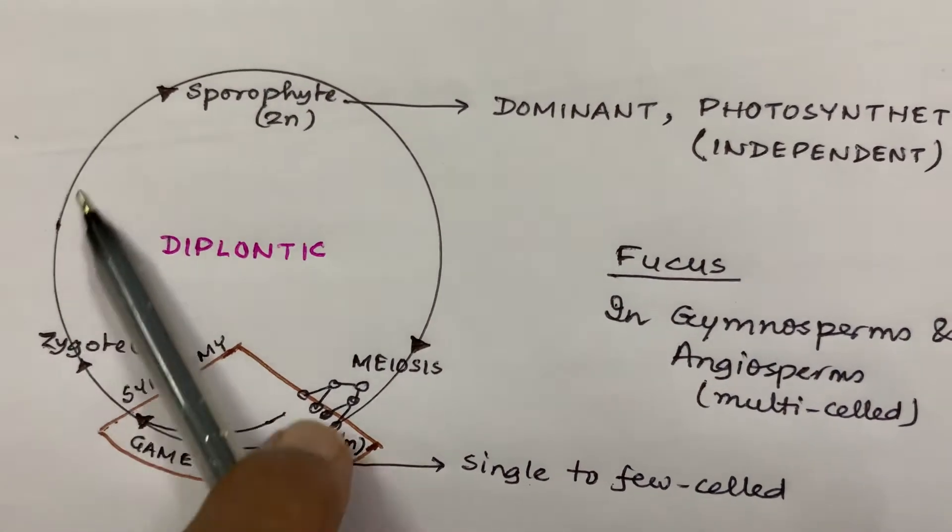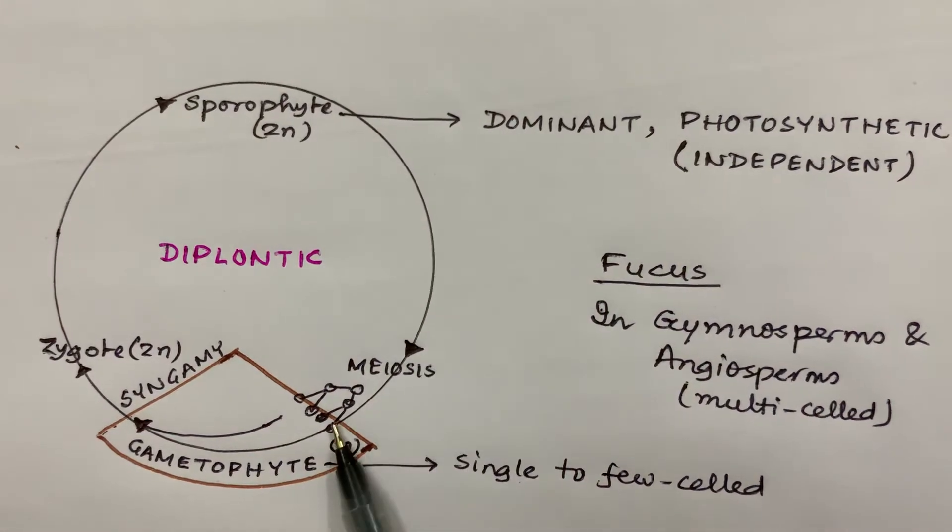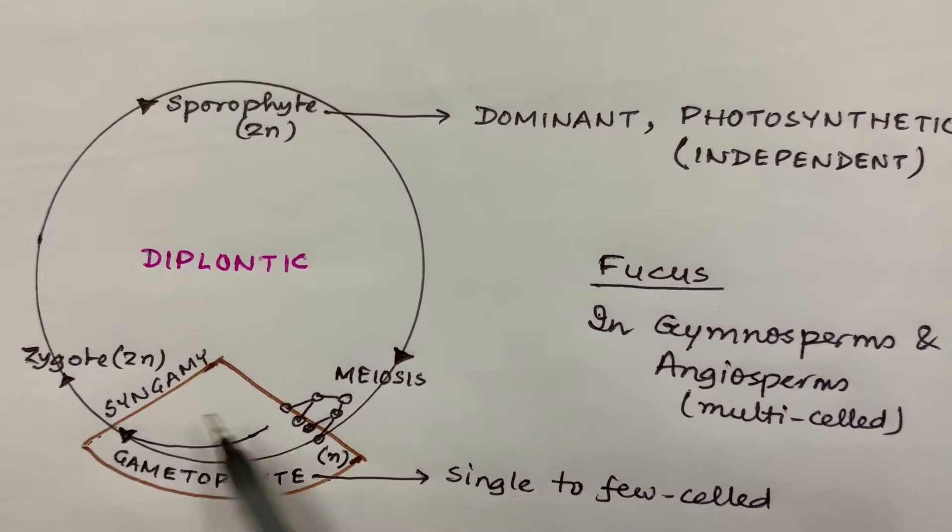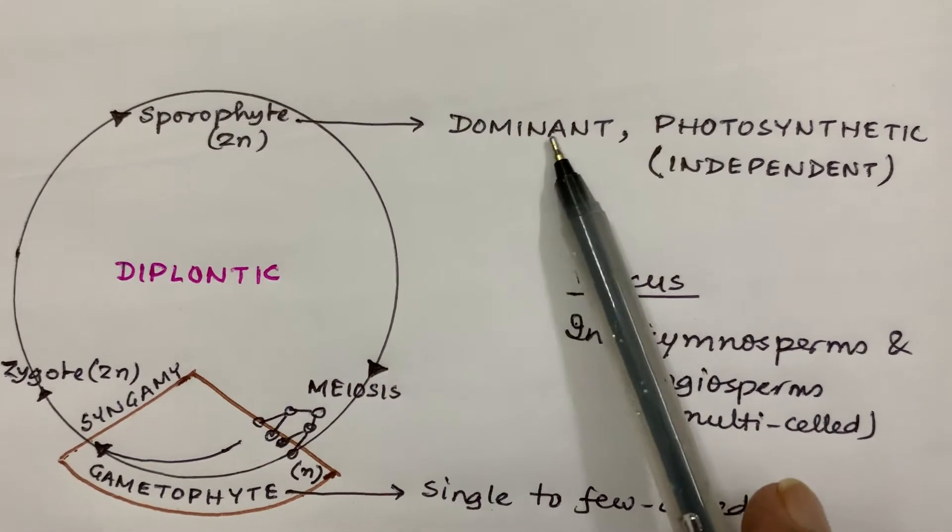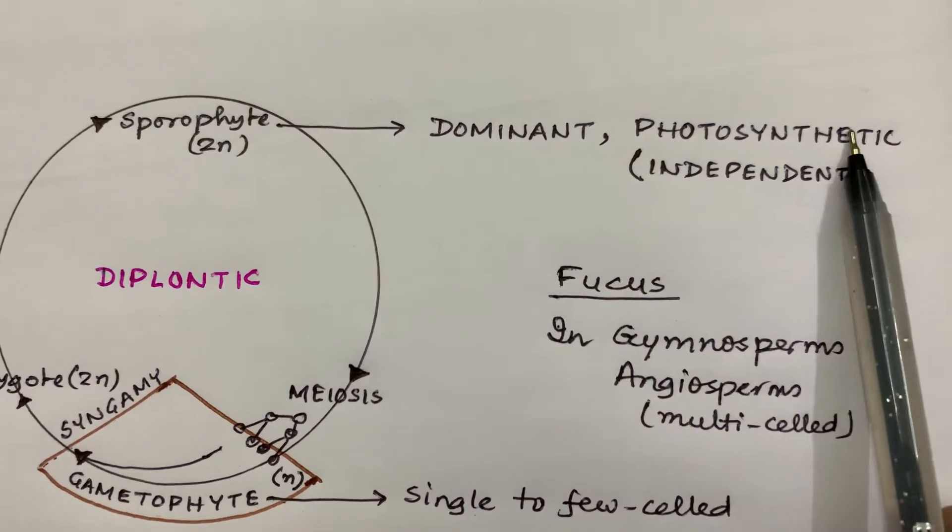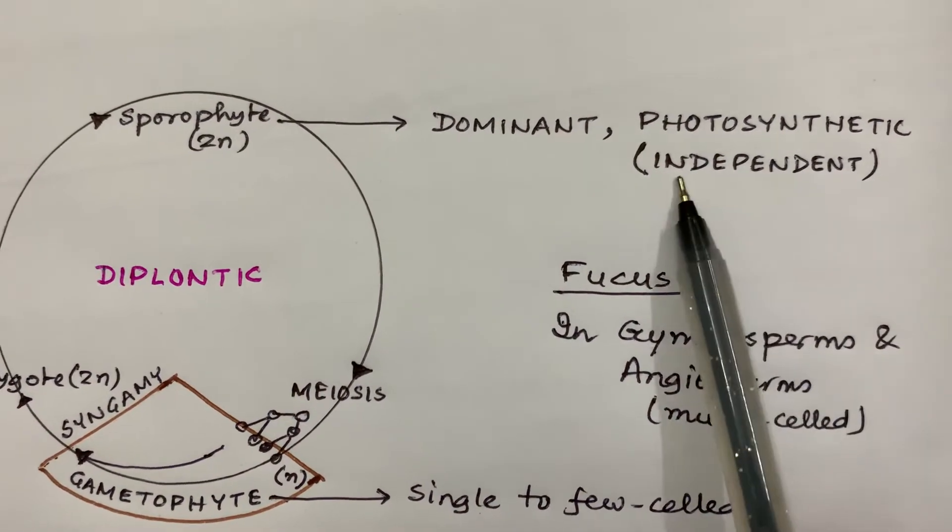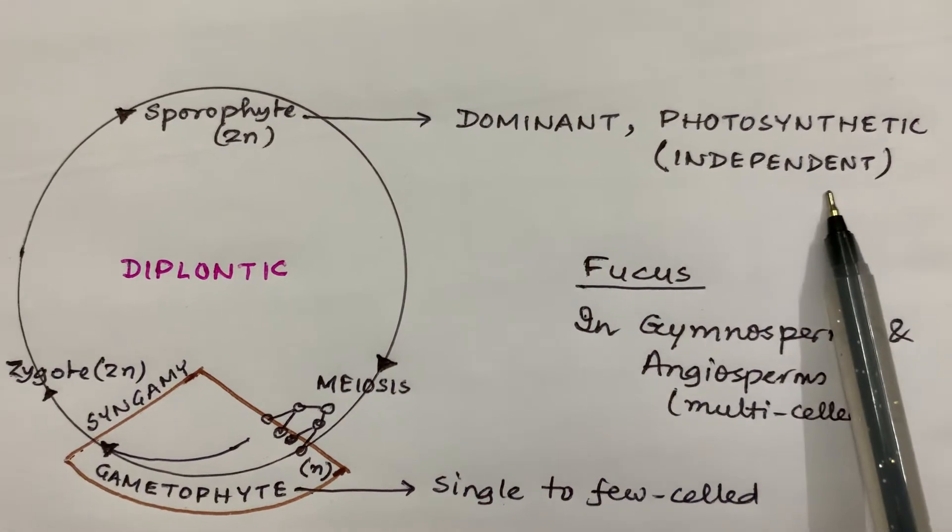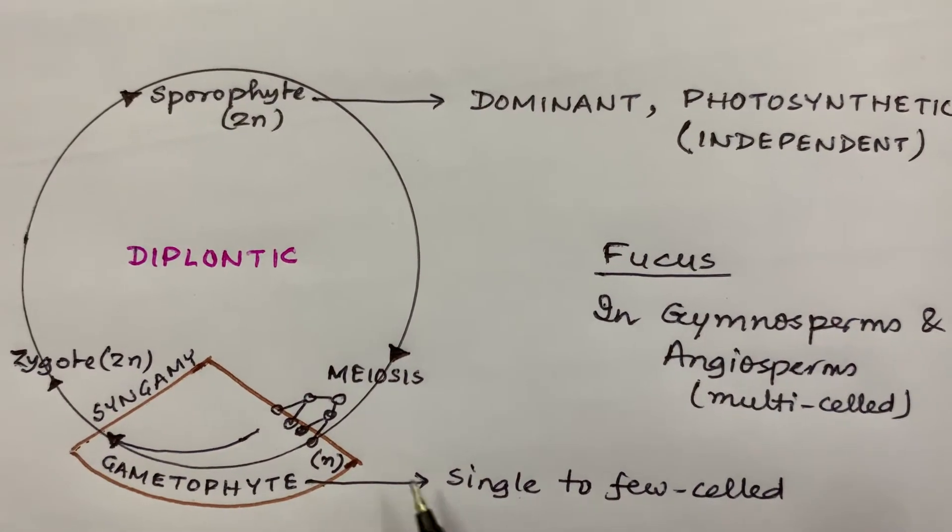In diplontic, we see the haploid phase is just a little one, this much. The diploid phase, the sporophyte phase, is the major phase. The diploid phase of sporophyte is dominant, photosynthetic, and photosynthetic means they are independent because they are autotrophs.